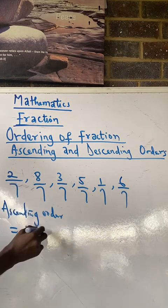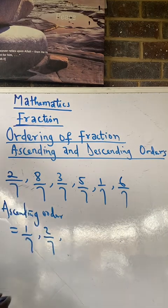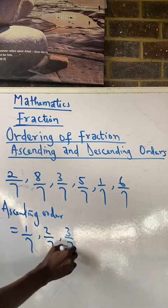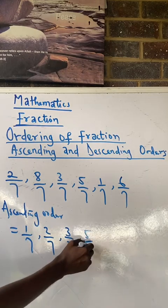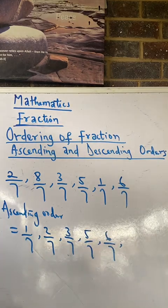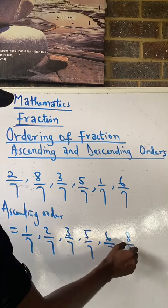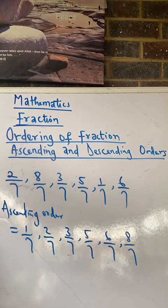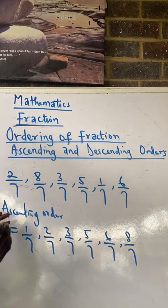Followed by 2 over 7. Followed by 3 over 7. Followed by 5 over 7. Followed by 6 over 7. And, lastly, 8 over 7 will be the biggest. So, this is how we arrange fractions with the same denominator.